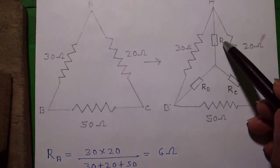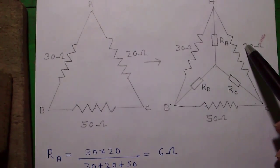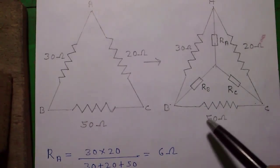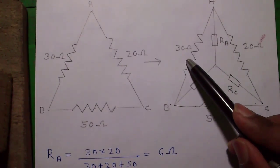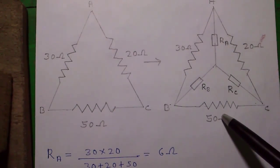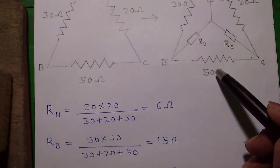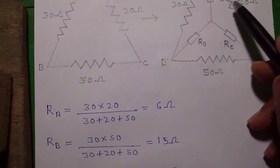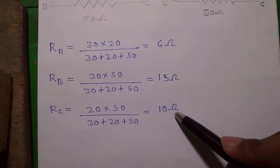So how to convert it? For Ra it will be 30 into 20 divided by 30 plus 20 plus 50 which is 6 ohm. Similarly for Rb it will be 30 into 50 divided by 30 plus 20 plus 50 which is 15 ohm. And for Rc it will be 50 into 20 divided by 30 plus 20 plus 50 which is 10 ohm.